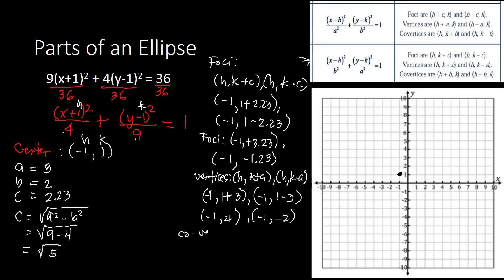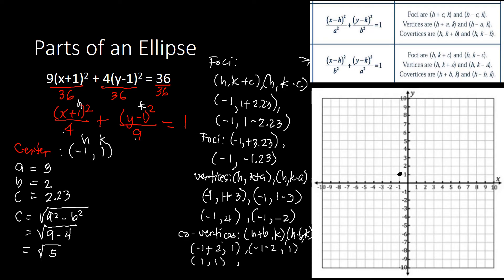For co-vertices: (h plus b, k) and (h minus b, k) — that is (negative 1 plus 2, 1) and (negative 1 minus 2, 1), simplifying to (1, 1) and (negative 3, 1). Those are the different parts using our formula.